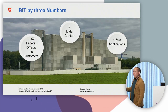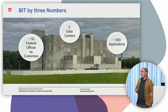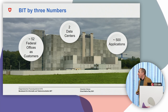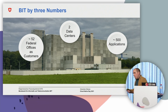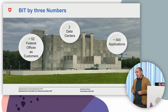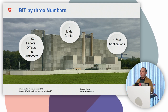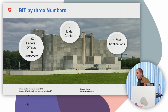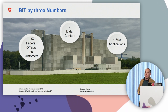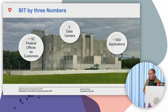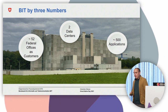A little background on BIT, since it's not so well known — federal offices don't give many public speeches. BIT is the main IT provider of the federal administration; it's one of six service providers and our customers are all the other federal offices. In total we serve around 52 offices. We operate two data centers and develop and operate around 500 applications inside them.